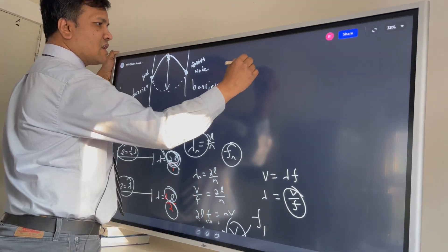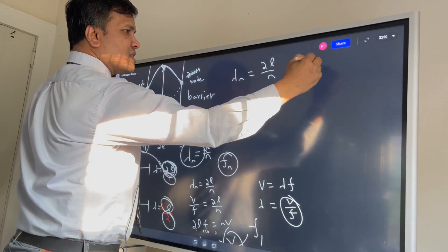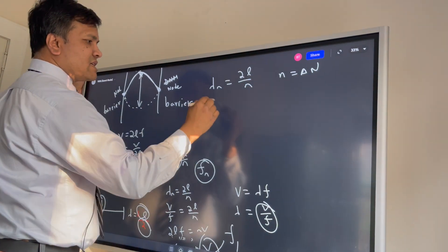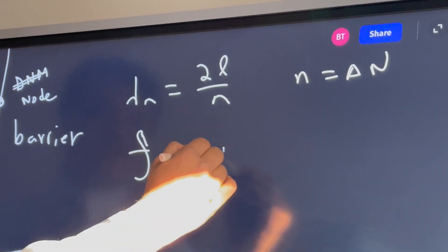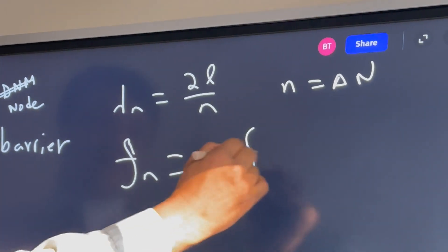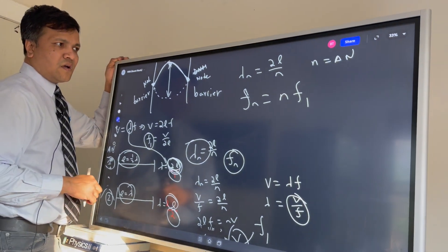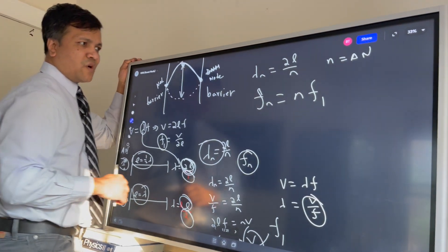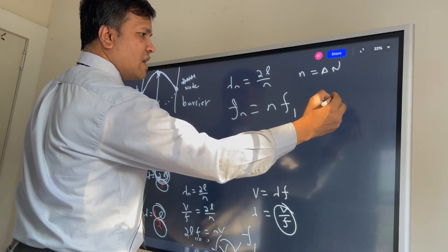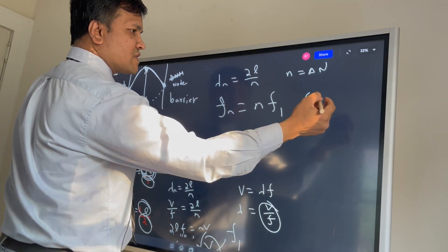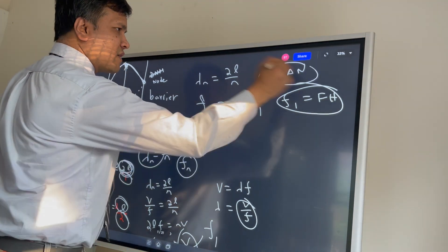So these are the two equations for the harmonic series: λ_n = 2L/n, and f_n = n·f_1, where f_1 = v/2L is the frequency of the first harmonic.